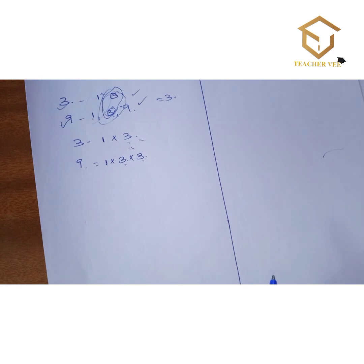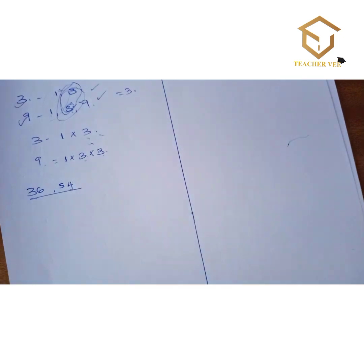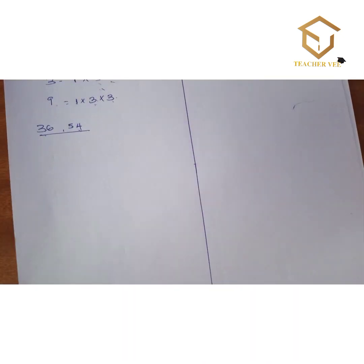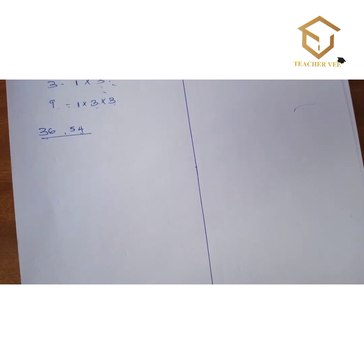Let's go into an example: find the greatest common factor of 36 and 54. First, express each number as a product of its prime factors — this is called prime factorization.